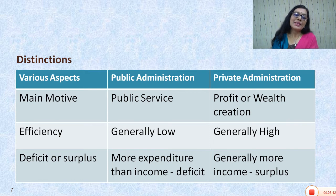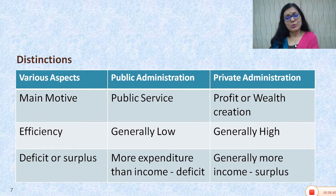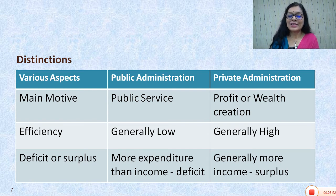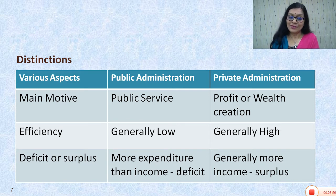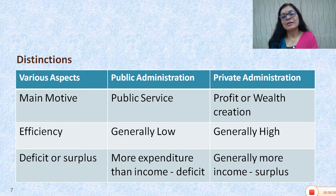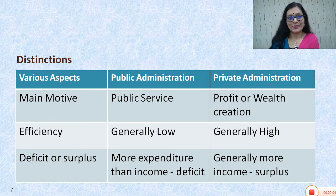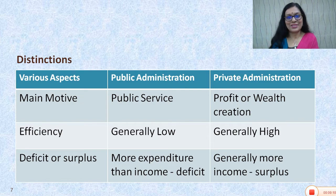Lastly, in terms of deficit or surplus, most government departments are expenditure oriented because administration involves expenditure, so the budget is also a deficit budget. Whereas in private administration there is more income and there is surplus. So these are the major distinctions between public administration and private administration.